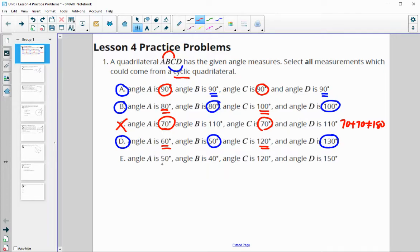In E, angle A is 50, C is 120. 50 plus 120 does not equal 180, so this one is not cyclic.